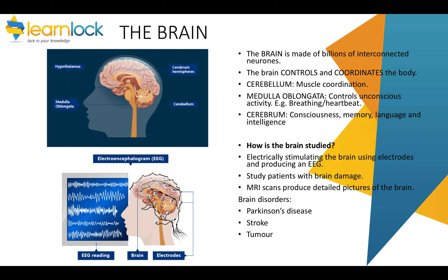Moving on to the brain. The brain is a complex organ — you just need to know some parts of it. Remember it controls and coordinates the body. Starting with the cerebellum, that's responsible for muscle coordination. You've also got the medulla oblongata, which controls unconscious activity — things you don't think about doing, like breathing or your heartbeat.